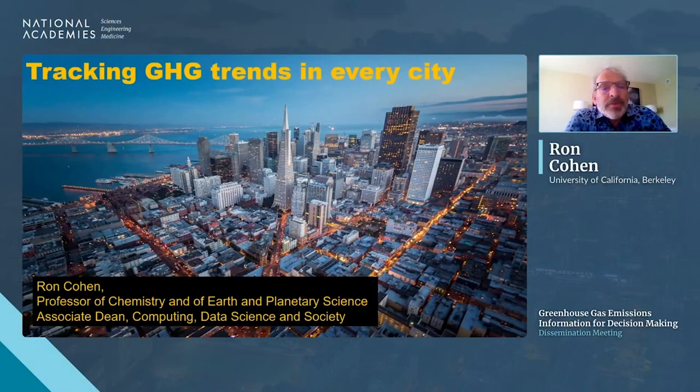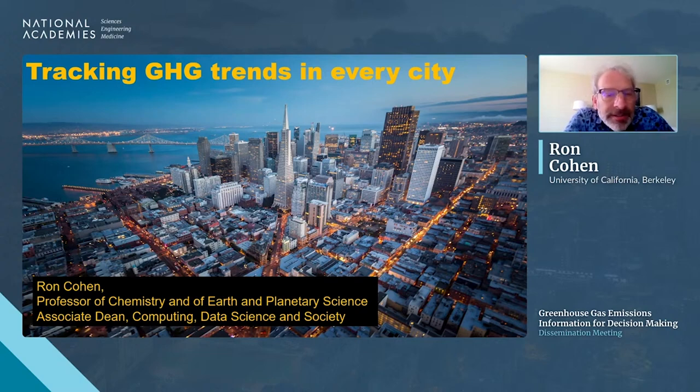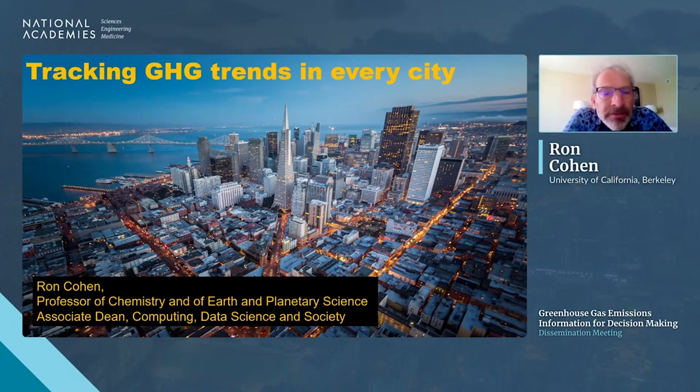Our next speaker is Professor Ron Cohen from the Chemistry Department at the University of California Berkeley, and also Chief Scientist at Secured Carbon, a company aiming to provide financing for projects coupled to verified greenhouse gas emission reductions. Ron wants to reinforce points from previous speakers and offer opinions from his own work in building a hybrid approach.